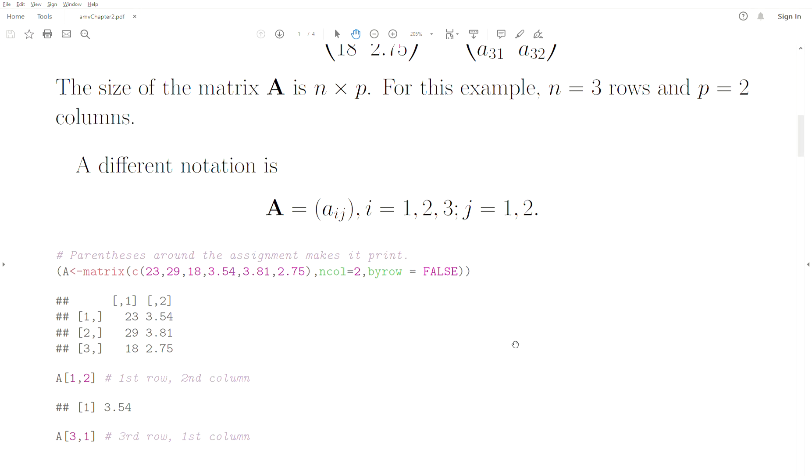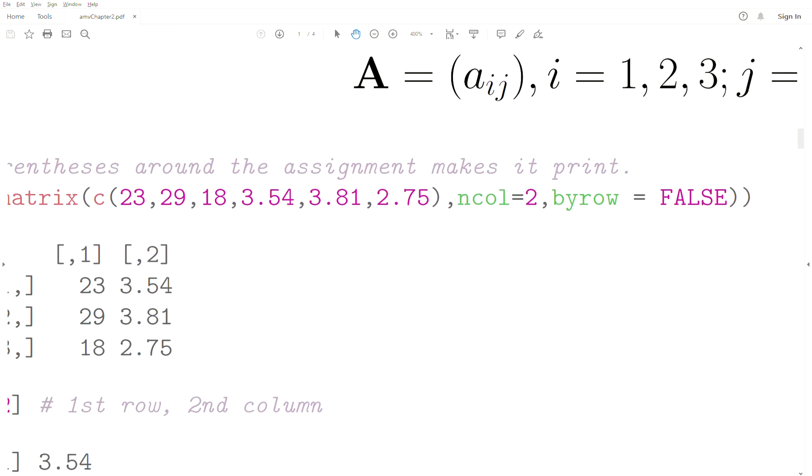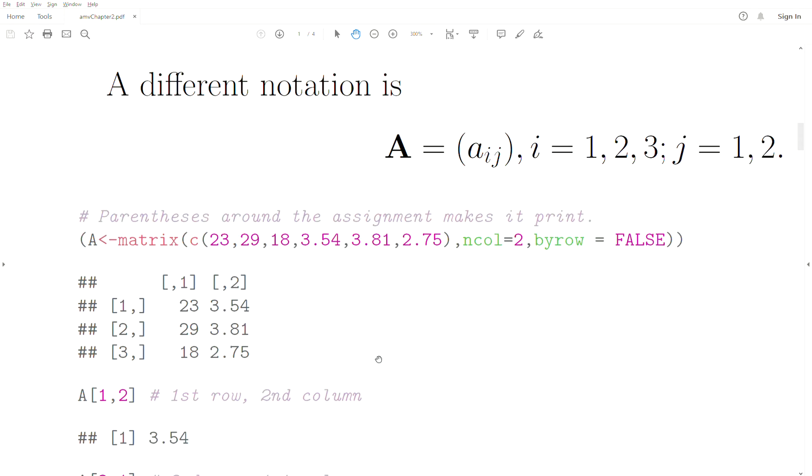In R, we assign numbers to a matrix using the matrix function. The C is a reserved function in R—it creates a vector of what's in the parentheses. It's just an array of numbers, though it could be characters. Then we put it in a matrix. We want two columns, by row equals false. That means we go down the column with these numbers. It divides how many entries there are by two—six entries total—and we get this.